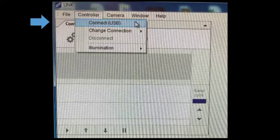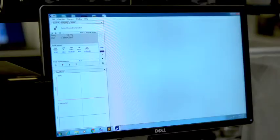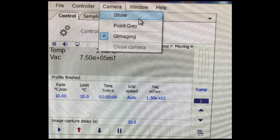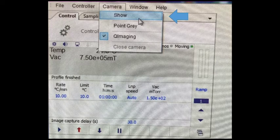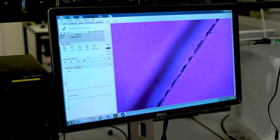The temperature and vacuum level should appear in the top left window. Navigate to the camera tab in the toolbar and click show. The microscope image should appear on the screen.